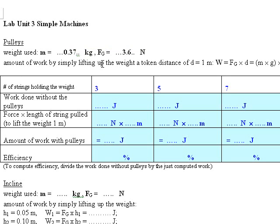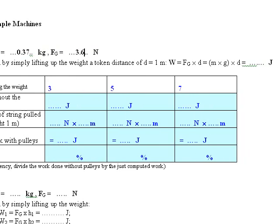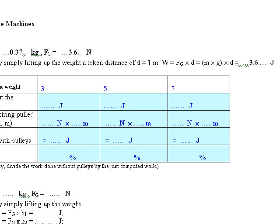Amount of work by simply lifting up the weight, the token distance of 1 meter, well that amount of work then is the force with which I need to lift them up, 3.6 newtons, times the 1 meter of the token distance that comes out to 3.6 joules. I will explain the word token distance in a moment again.